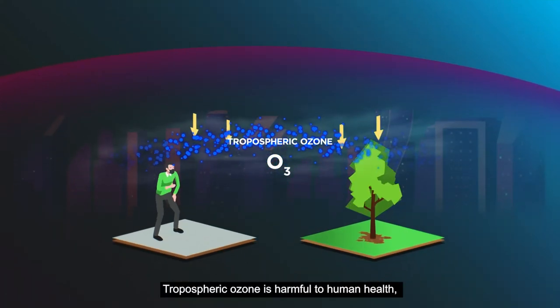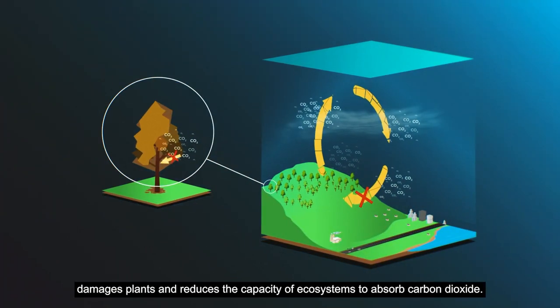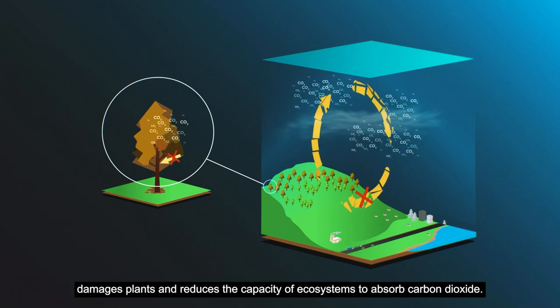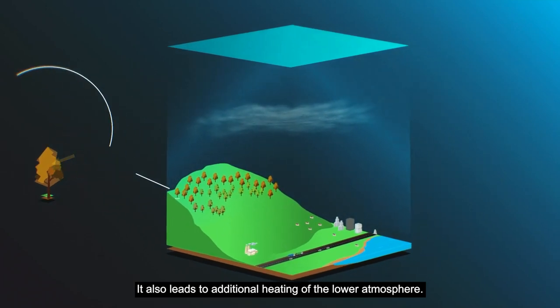Tropospheric ozone is harmful to human health, damages plants and reduces the capacity of ecosystems to absorb carbon dioxide. It also leads to additional heating of the lower atmosphere.